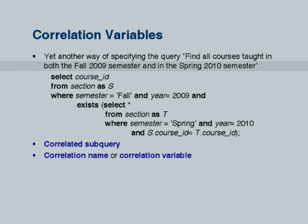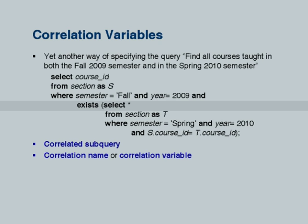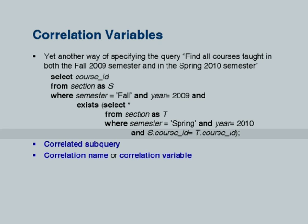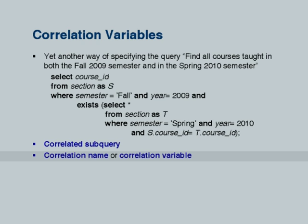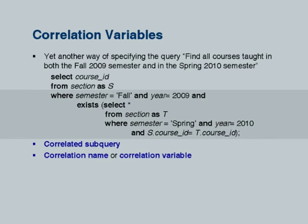Find courses taught in both semesters can be written as follows. We take one copy of section S in fall 2009 and in the subquery use EXISTS. The subquery has two conditions: the section copy T is in spring 2010, and S.course_ID equals T.course_ID. Note that this S is from the outer query while T is from the inner query. This is an example of a correlation variable — S is defined in the outer query but used in the inner query. This kind of subquery which uses a variable from outside is called a correlated subquery.